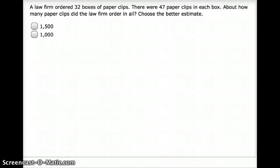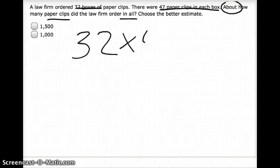Let's do one more. The law firm ordered 32 boxes of paperclips. There were 47 paperclips in each box. About how many paperclips did the law firm order in all? So I've got 32 boxes and 47 paperclips in each box. Then you want to take your two numbers: 32 times 47.